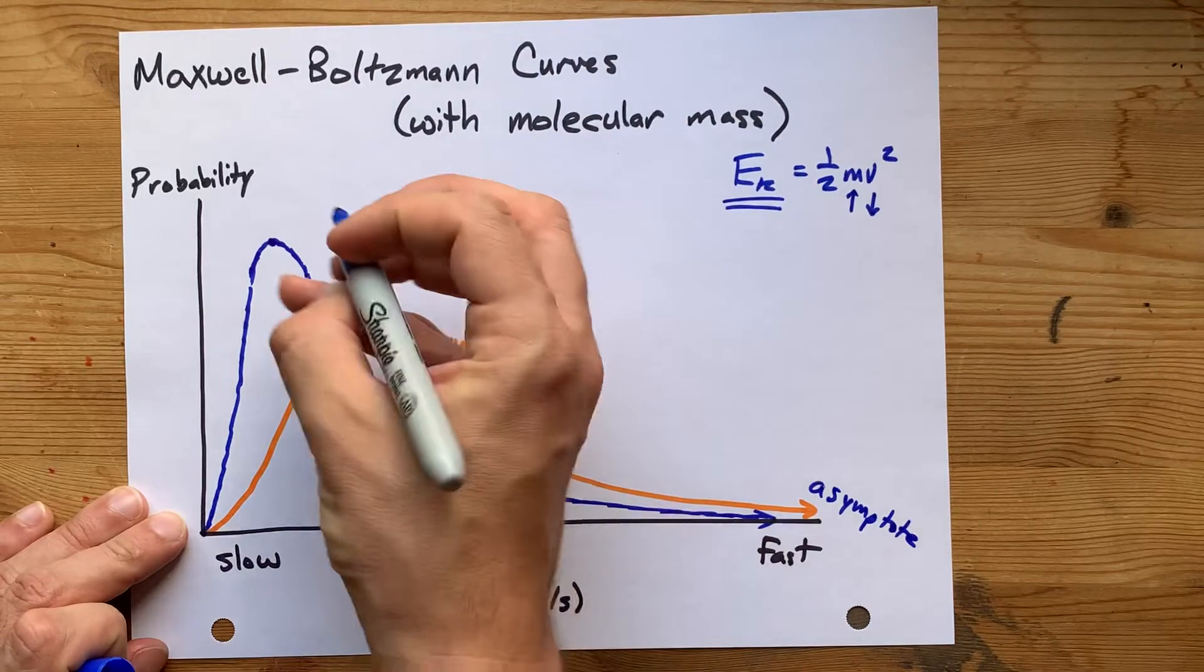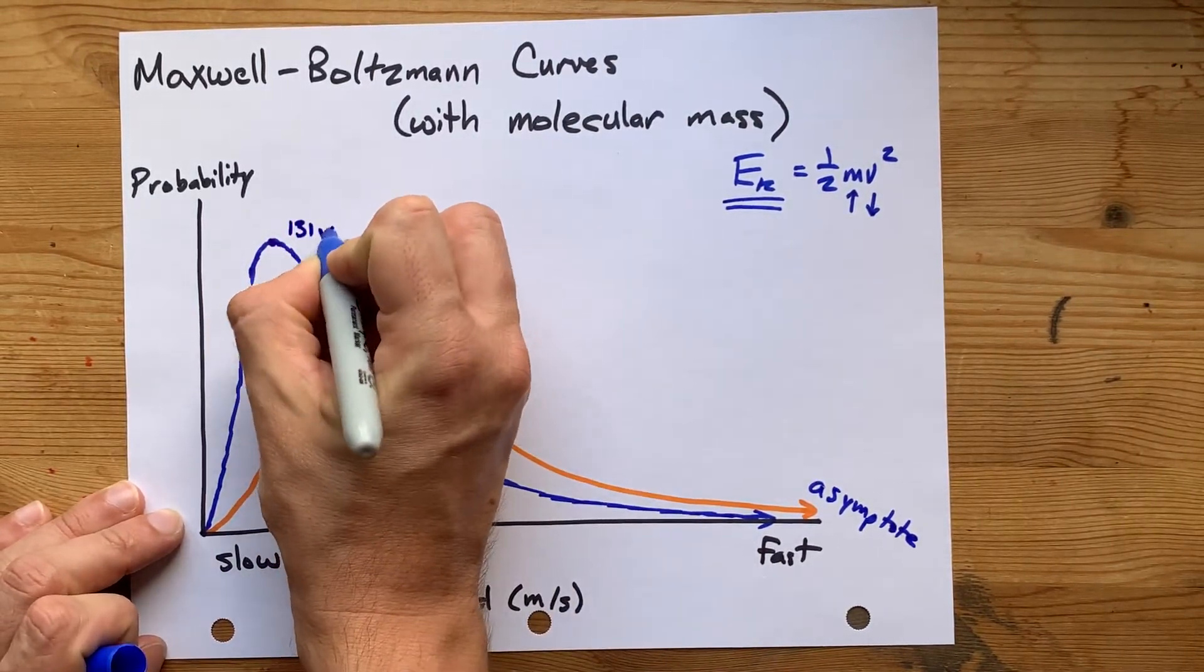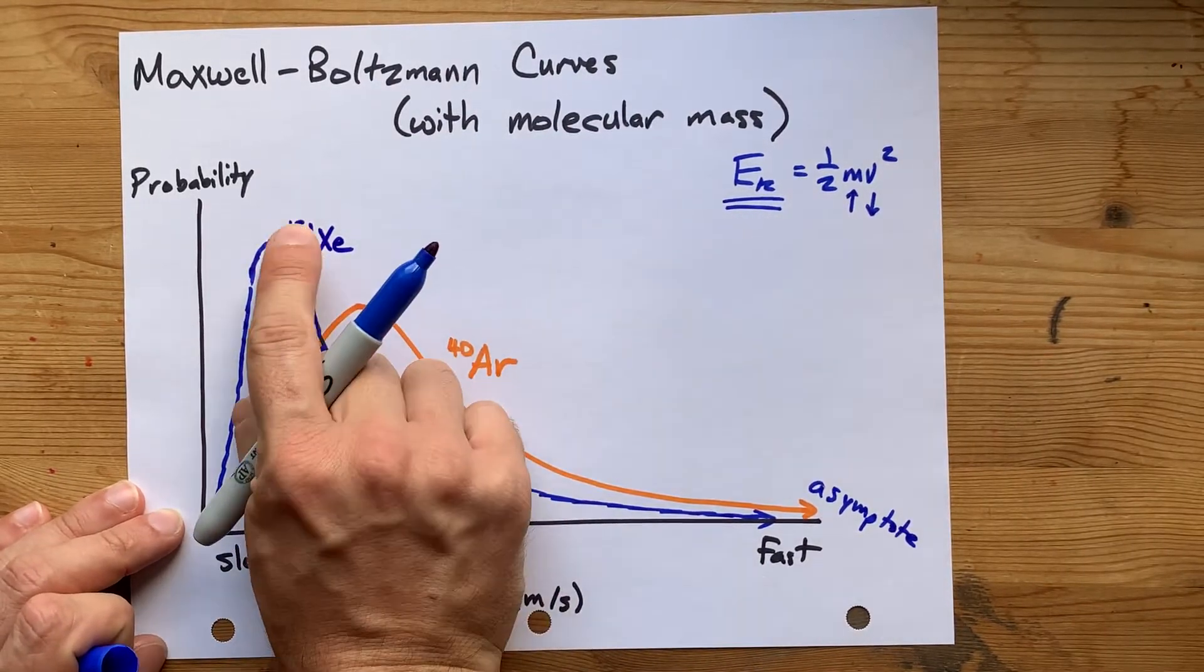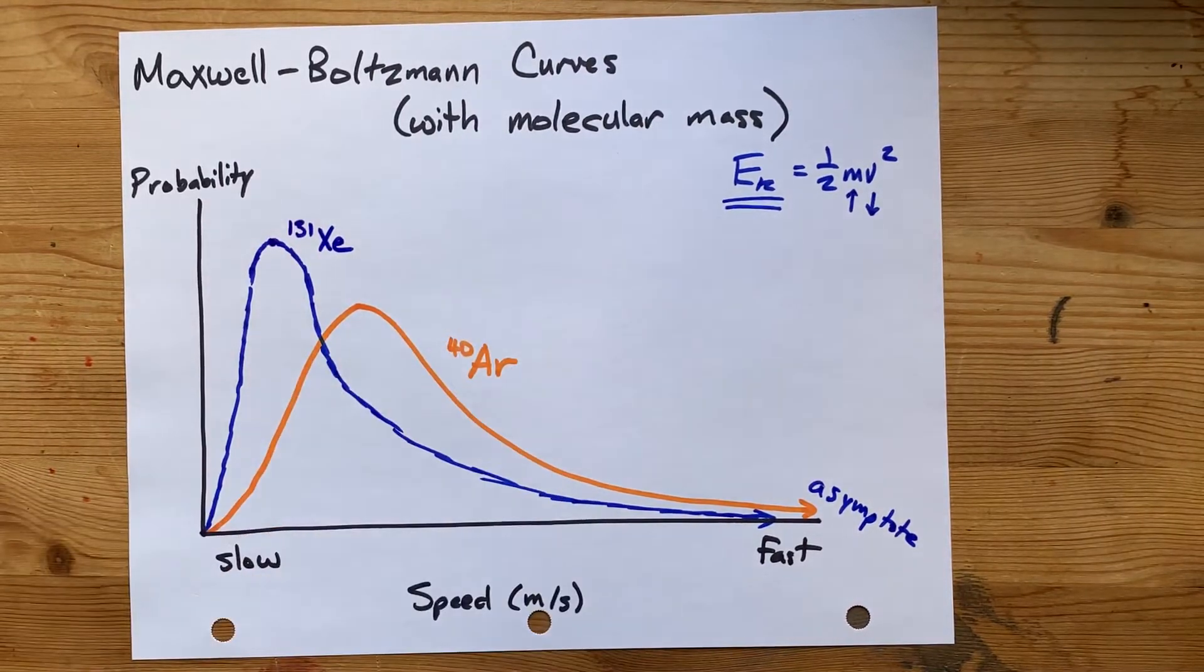So a heavier particle, like xenon, xenon weighs, I forget. I think it's 131. Don't quote me on that. A heavier particle with a heavier mass has its peak up and to the left compared to a lighter particle.